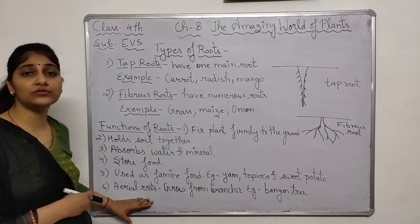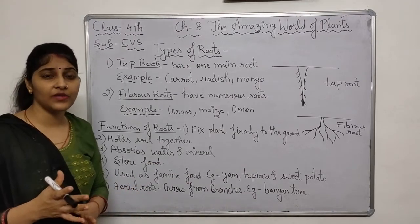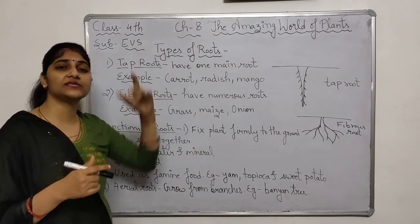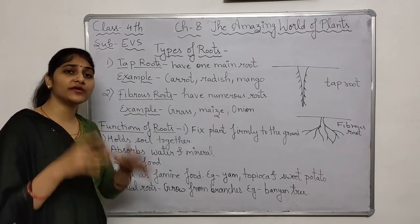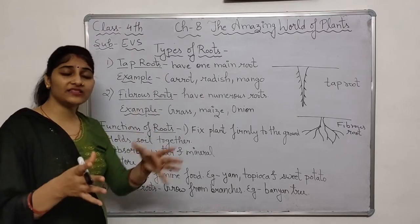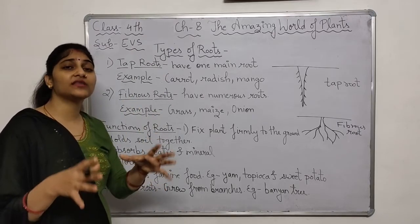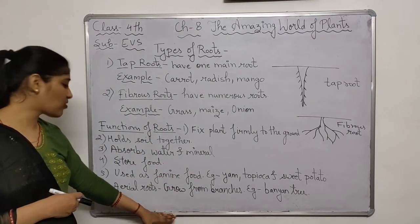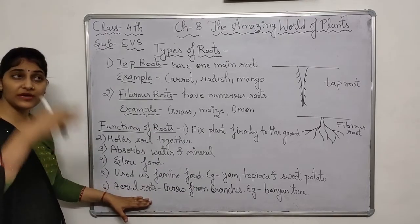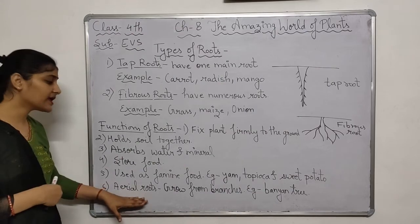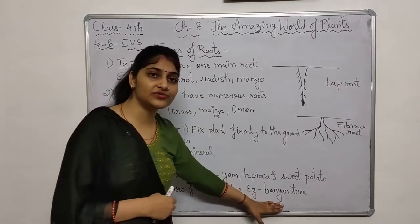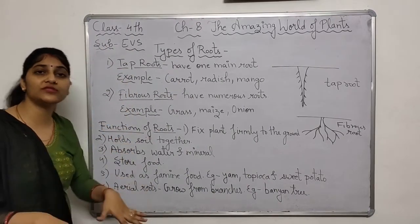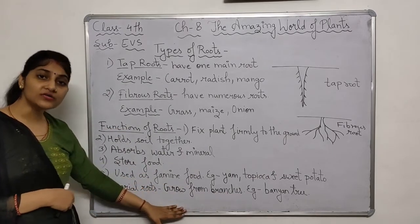The last function is aerial roots. Some plants are very big and heavy. In these plants, roots start to grow from the branches. These roots are called aerial roots. The example is the Banyan tree. If you have seen a Banyan tree, you will notice that there are many roots growing from its branches which reach down to the ground, giving the tree extra support.